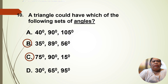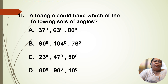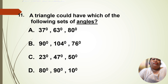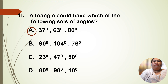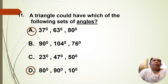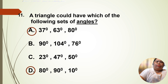In a triangle, the third side must be smaller or greater than the sum. The triangle could have which of the following sets of angles? We have 37, 63, 80 — because 37 plus 63 plus 80 equals 180. And also 80, 90, 10 — but wait, the total must be 180, so let's verify those sets carefully.